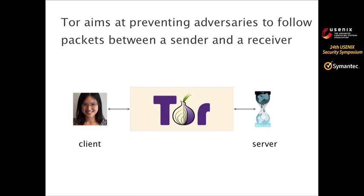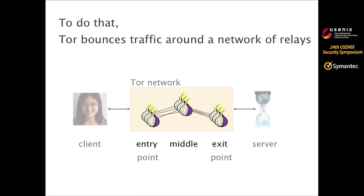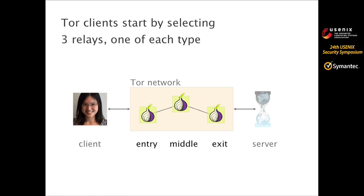To counteract that problem, anonymity systems such as Tor have been designed. Tor provides anonymity by hiding IP headers and prevents an attacker from associating a source with a destination. Tor does that by bouncing your traffic on top of an overlay network composed of three types of relays. Entry relays constitute the entry points to the Tor network; they receive traffic from the client and bounce it to the middle relay. The middle relay then bounces it to the exit point.